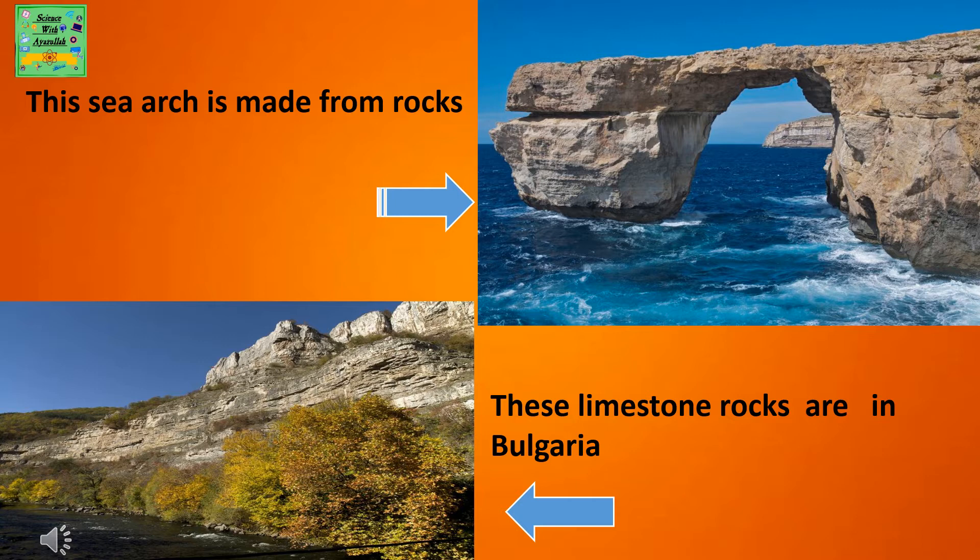In the first picture, the sea arc is made from rocks, and in the second picture, the limestone rocks are in Bulgaria.